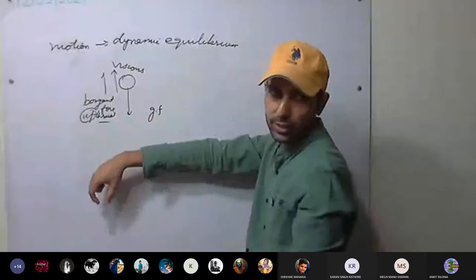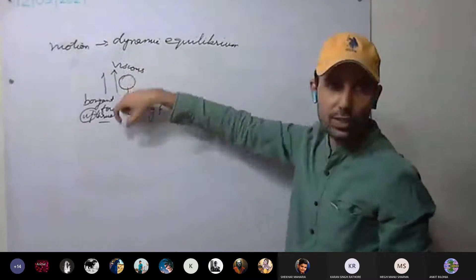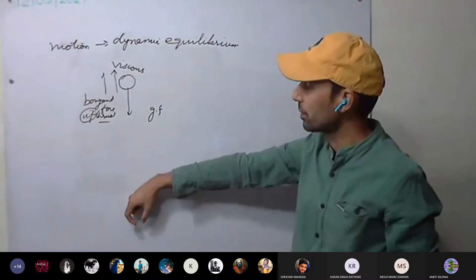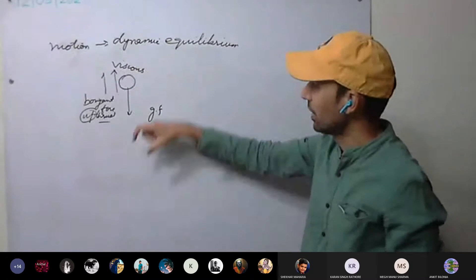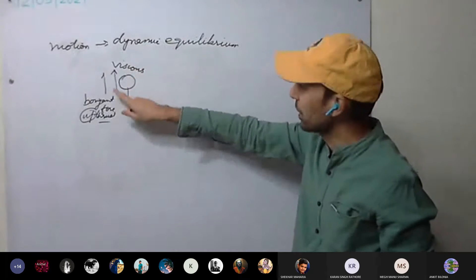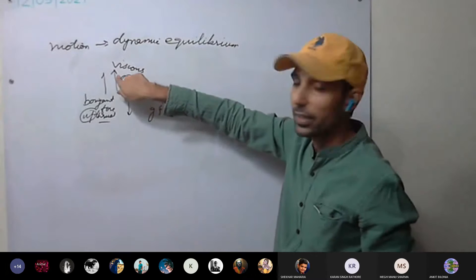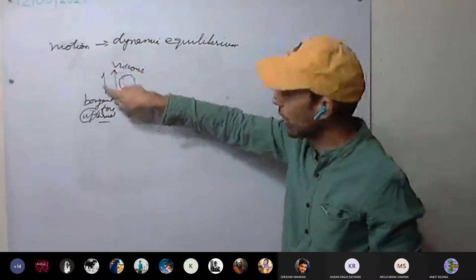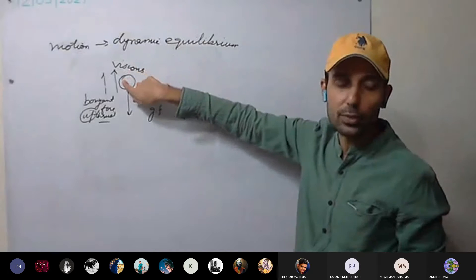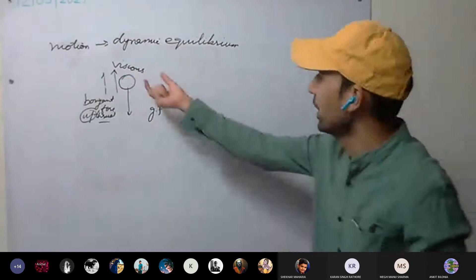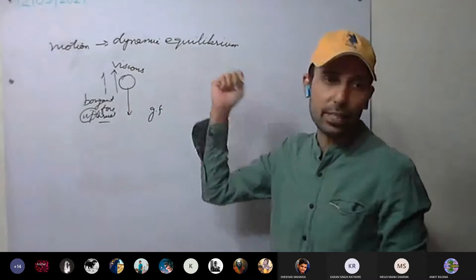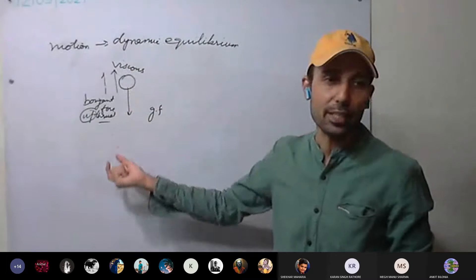Now it will be dropping with the same velocity — that is, velocity is not changing. The raindrop is in dynamic equilibrium. No net force is acting on it; it is dropping with the same velocity. Throughout the journey, after some time, the viscous drag plus buoyant force becomes equal to the weight of the drop, and at that time it moves with the same velocity. The raindrop is said to be in dynamic equilibrium.